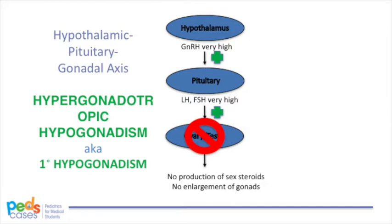When the gonads no longer follow the commands of the hypothalamus and pituitary, the gonads do not produce sex steroids and do not increase in size — in other words, they become hypogonadal. Because we lose negative feedback from the gonads, more GnRH, LH, and FSH are produced to drive the system, but to no avail. We see very high levels of LH and FSH that can even exceed pubertal levels — thus hypergonadotropic. This condition is called hypergonadotropic hypogonadism, also known as primary hypogonadism, because the hypogonadism occurs at the level of the gonads.